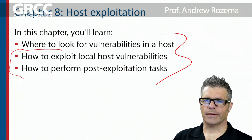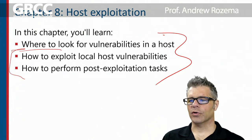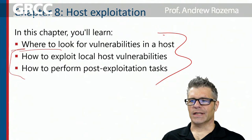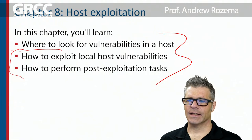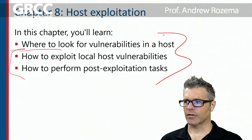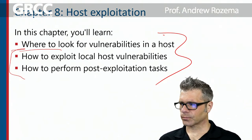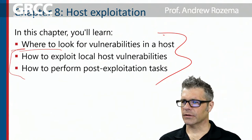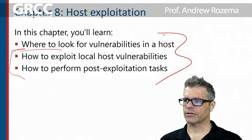Generally speaking, post-exploitation involves establishing persistence and covering tracks, depending on what your engagement requires. From a bad guy's perspective, they're definitely going to cover their tracks and establish persistence. In certain pen testing scenarios, maybe you just get the compromise, get a shell on a box, say 'we have you now,' write your report, and collect your check.